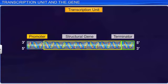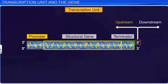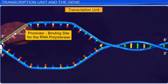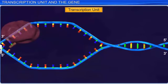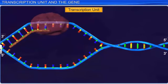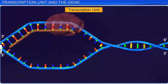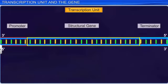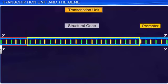The promoter is the starting point of the transcription process and is present upstream at the five prime end of the structural gene. In the promoter, there is a binding site for RNA polymerase, which moves along the DNA strand from three prime to five prime direction. With the help of RNA polymerase, the promoter can code for the two strands of the DNA helix. However, these two DNA strands will get reversed if the promoter switches its position with the terminator.